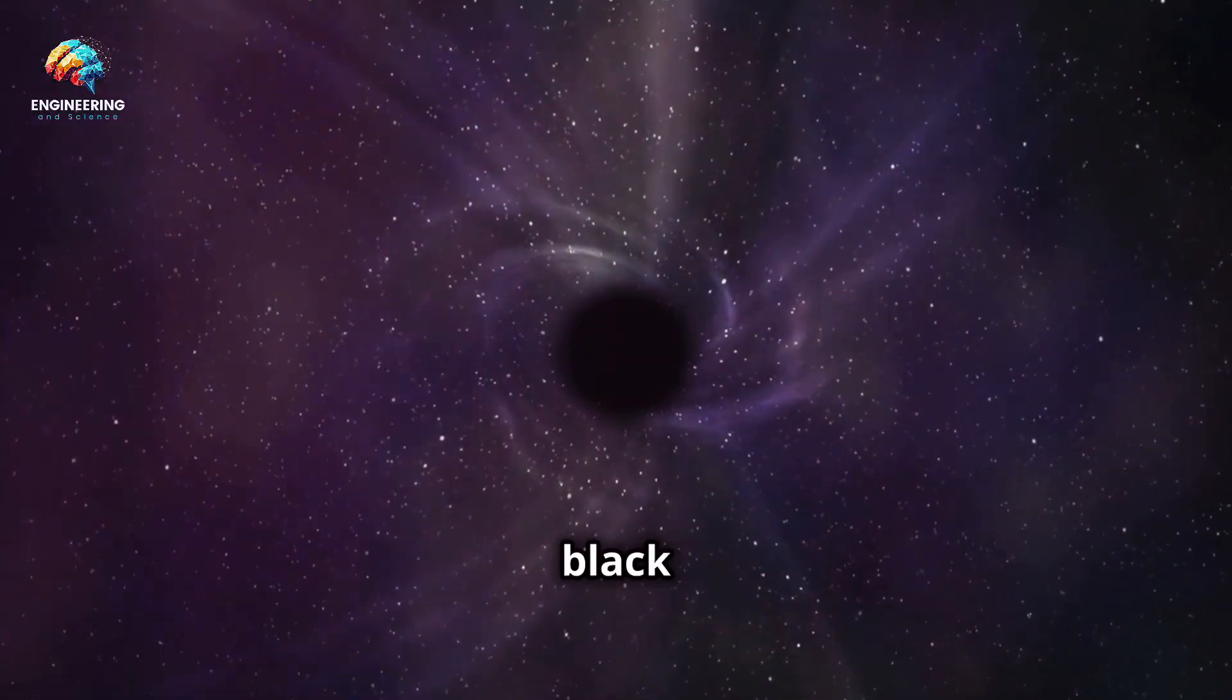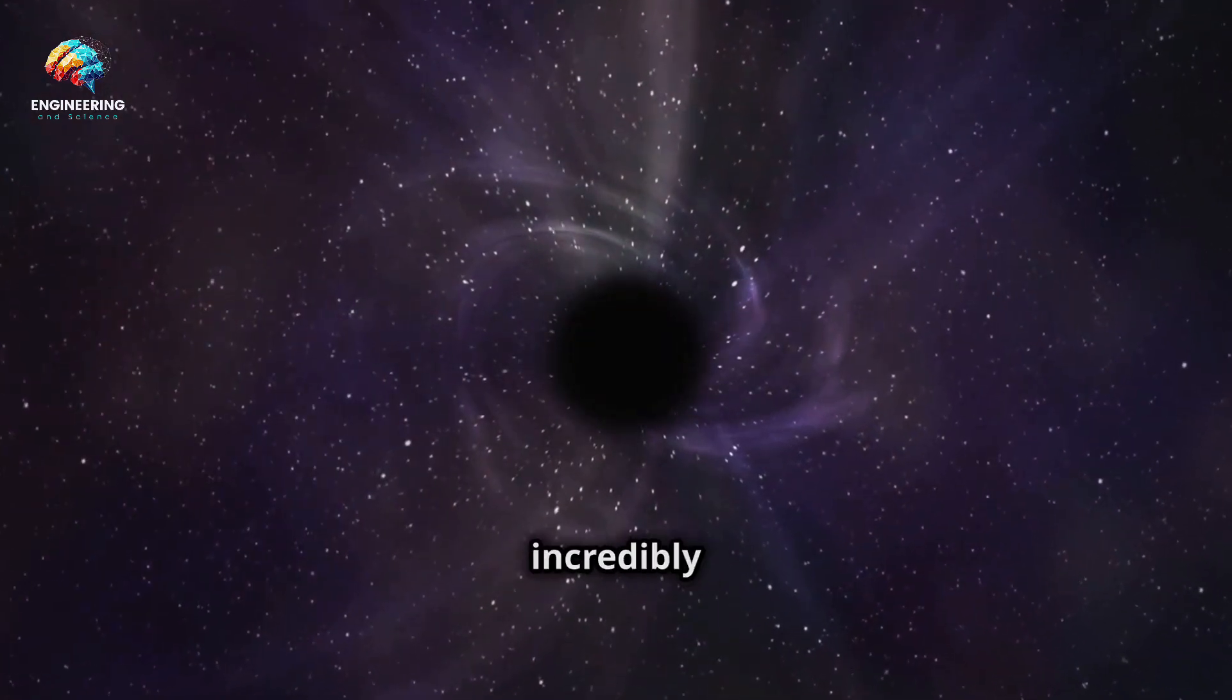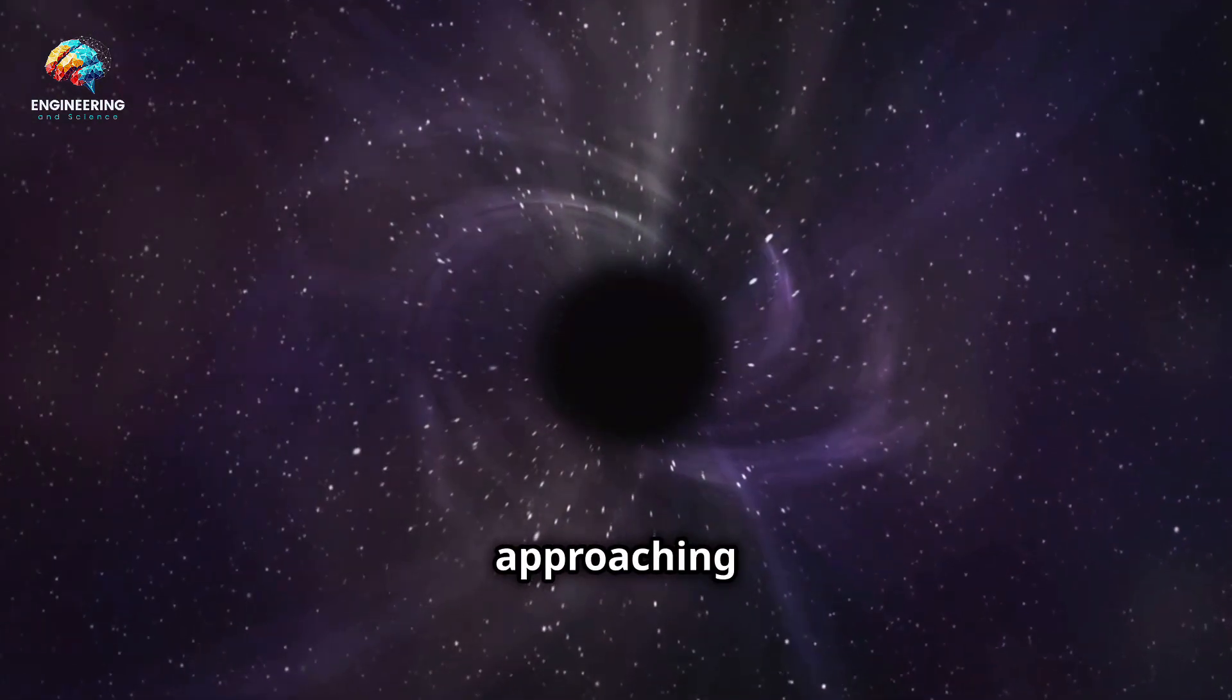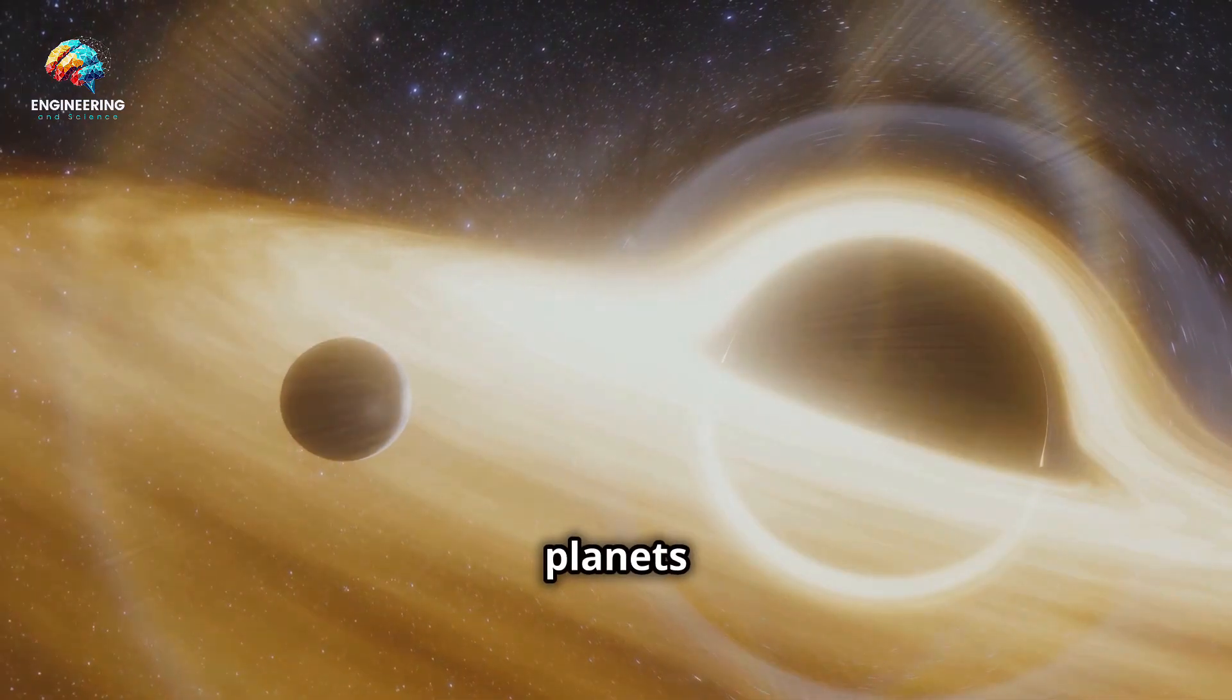Spin refers to the rotation of a black hole. This rotation can be incredibly fast, sometimes approaching the speed of light. Just like planets and stars, black holes can rotate on their axis.